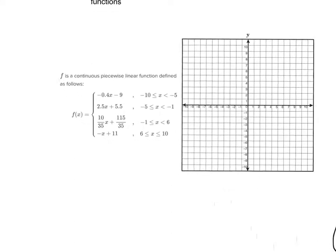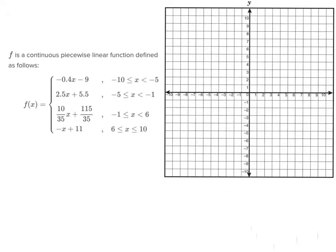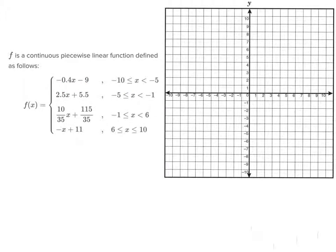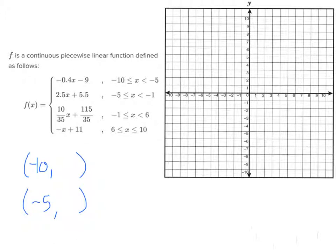Now let's look at the second example. Instead of three parts to the piecewise function, this one has four. This function is defined from negative 10 to negative 5. You need to plug negative 10 into this function and negative 5 into this function to find your outputs. When you plug in negative 10, you get negative 5. When you plug in negative 5, you get negative 7.